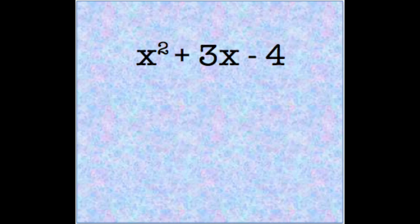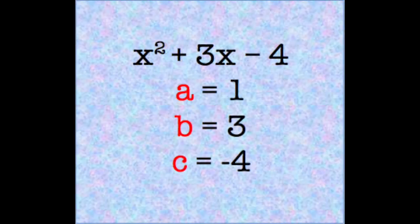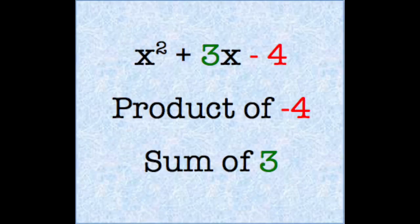If we want to factor a quadratic that looks like this, we see that our a value is 1, our b value is 3, and our c value is negative 4. Now, we have a negative c value to deal with. We need to find two numbers that have a product of negative 4 and a sum of 3.